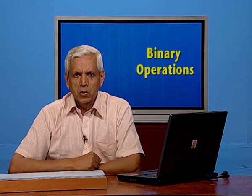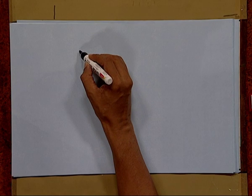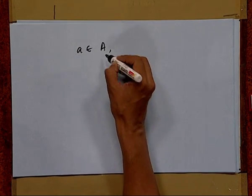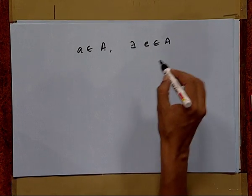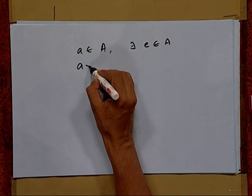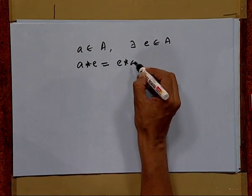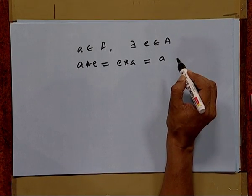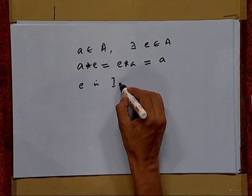Firstly, we take the notion of identity. If we have a binary operation defined on a set A, with the property that for all A belonging to A, there exists E belonging to A such that A star E is equal to E star A is equal to A, then we say E is the identity.